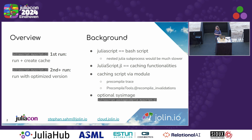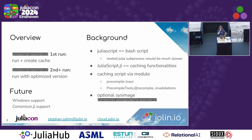You can also activate the package compilation to be triggered every time by setting an environment variable. Take a look at the website, the GitHub site — that's pretty easy. And to add, in the future, Windows support is needed, and also the famous Comonicon package does not work yet. I need to do some macro expansion to make this work as well. And that's about it.